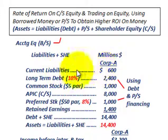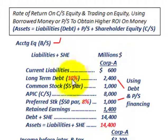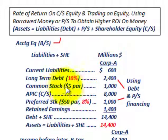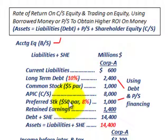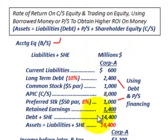Corporation A has current liabilities of $600,000, and long-term debt — in the form of bonds — at a 10% interest rate, with $2,400,000 outstanding. They have common stock at $1,000,000 par, additional paid-in capital of $8,000,000, preferred stock at $50 par with an 8% dividend rate totaling $1,000,000, and retained earnings of $1,400,000. Total debt plus shareholders' equity is $14,400,000.